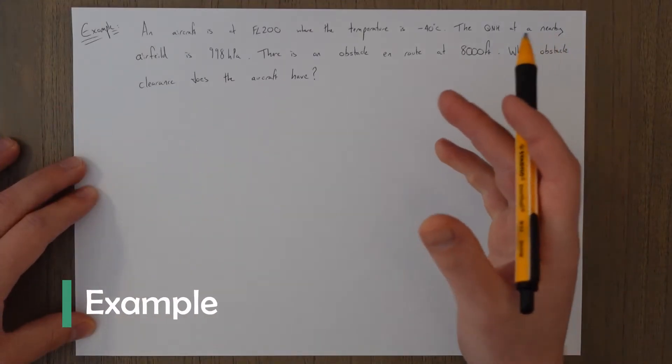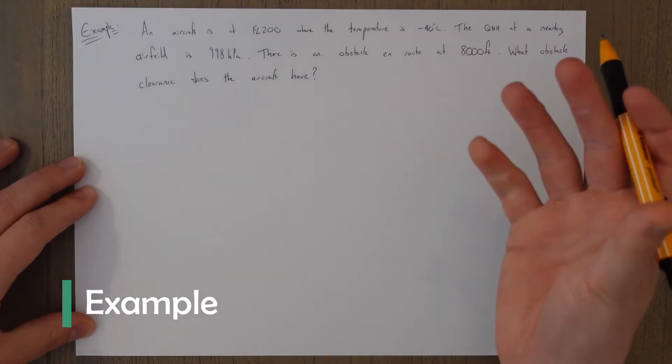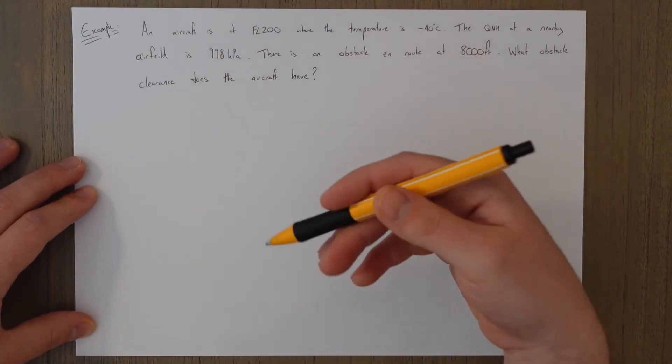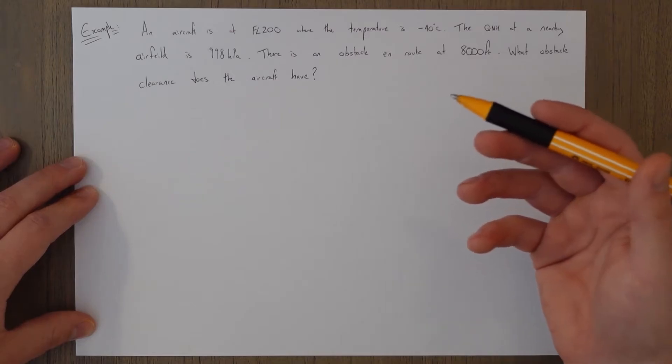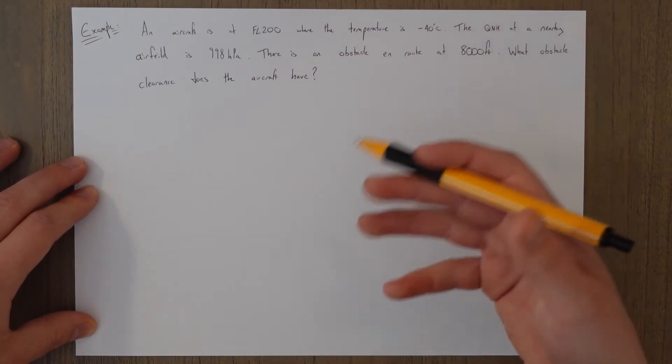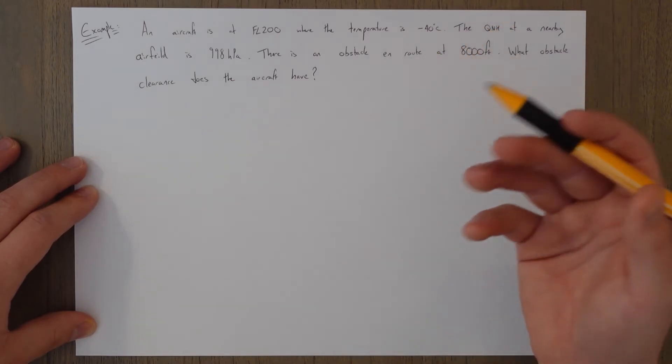So I'm just going to do a quick example of the temperature error calculation. For more information, as I said before, go back and watch that video on altimetry that was in the GNAV series. So this example will assume that you're comfortable with a few of the definitions, vertical distances, etc.